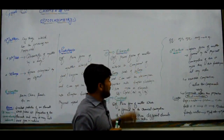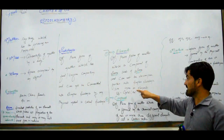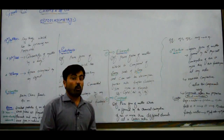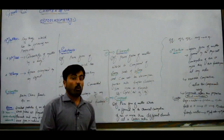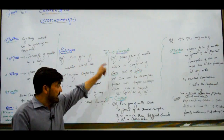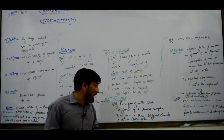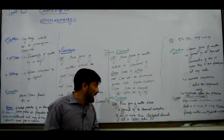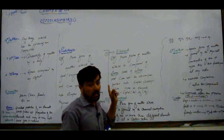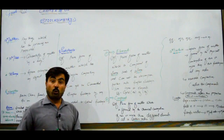Substances are further divided into two types: elements and compounds. An element is a pure form of matter which is composed of the same kind of atoms and cannot be decomposed further into simpler substances. Examples of elements include gold, beryllium, magnesium, nitrogen, carbon, oxygen, and so on.